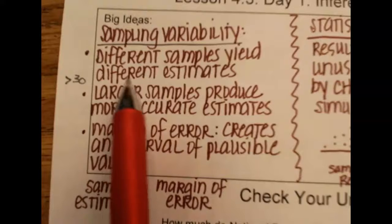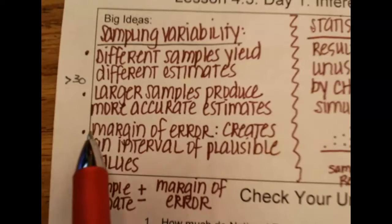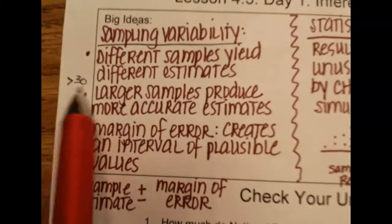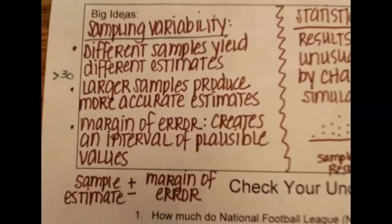To help reduce some of this variability, we want to take larger sample sizes to get a more accurate estimate. You should probably have sample sizes greater than 30. That helps the most.